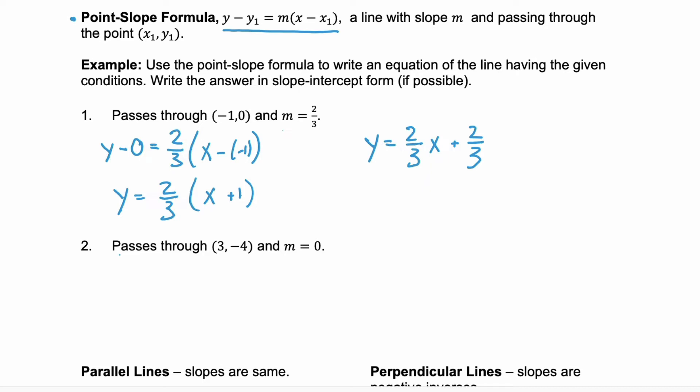Example two, we need it to pass through the point 3, negative 4 and have a slope of zero. Okay, so we have y minus the y-coordinate negative 4 equals the slope of zero times x minus the x-coordinate of 3. Y minus negative 4 is y plus 4 equals zero times x minus 3. Zero times anything is zero. Let's subtract 4 from both sides and this is the line y equals negative 4. Well that makes sense because a slope of zero is going to be a horizontal line. So this is a horizontal line at y equals negative 4 and this is actually simplified into slope-intercept form. The slope is zero and the y-intercept is negative 4.